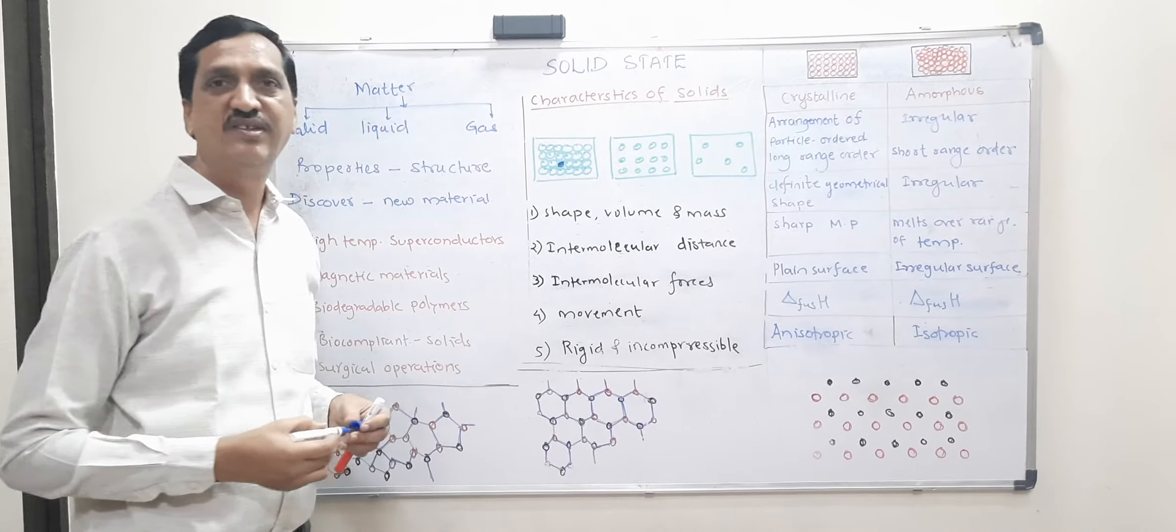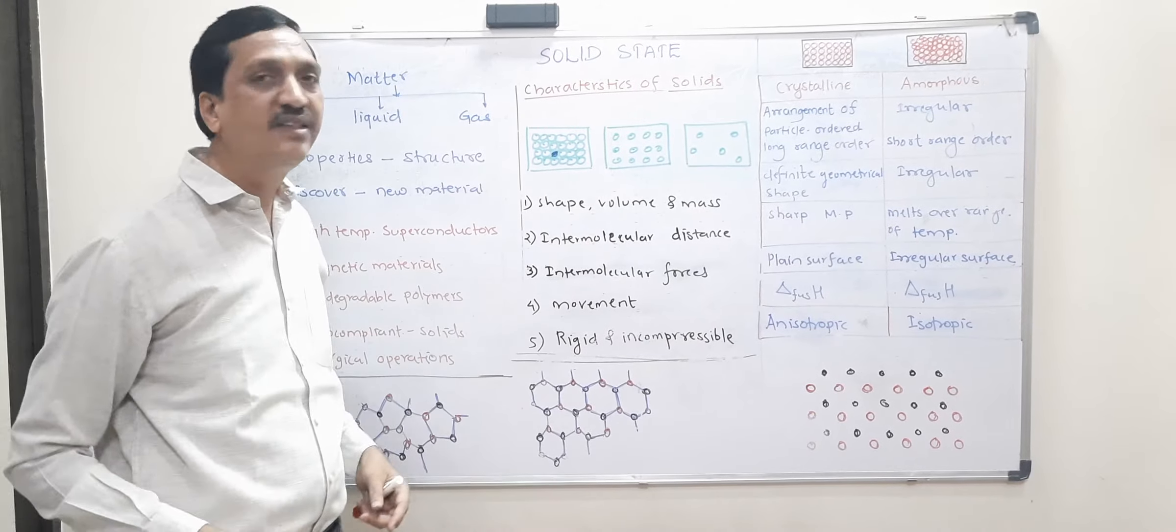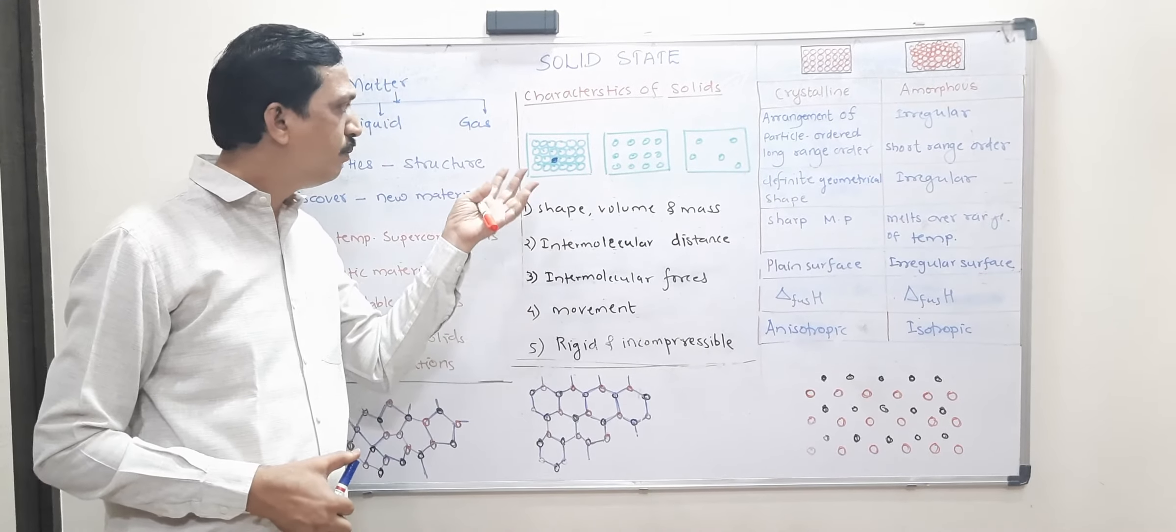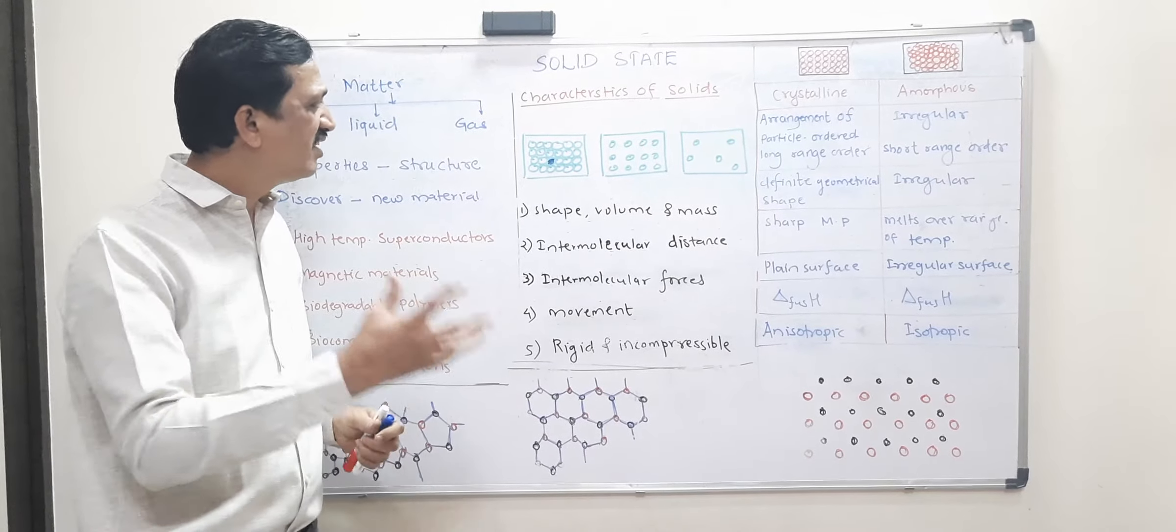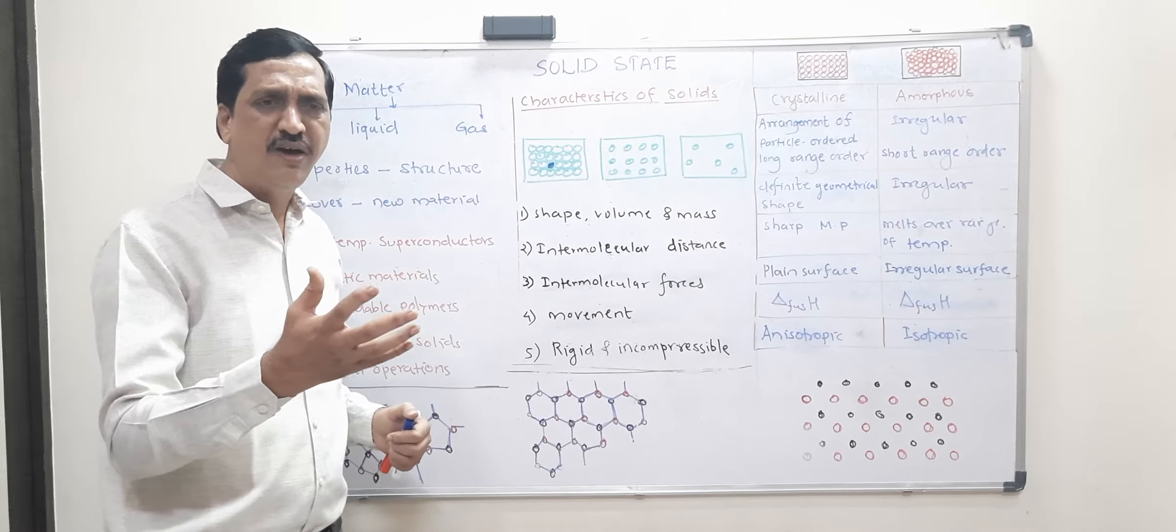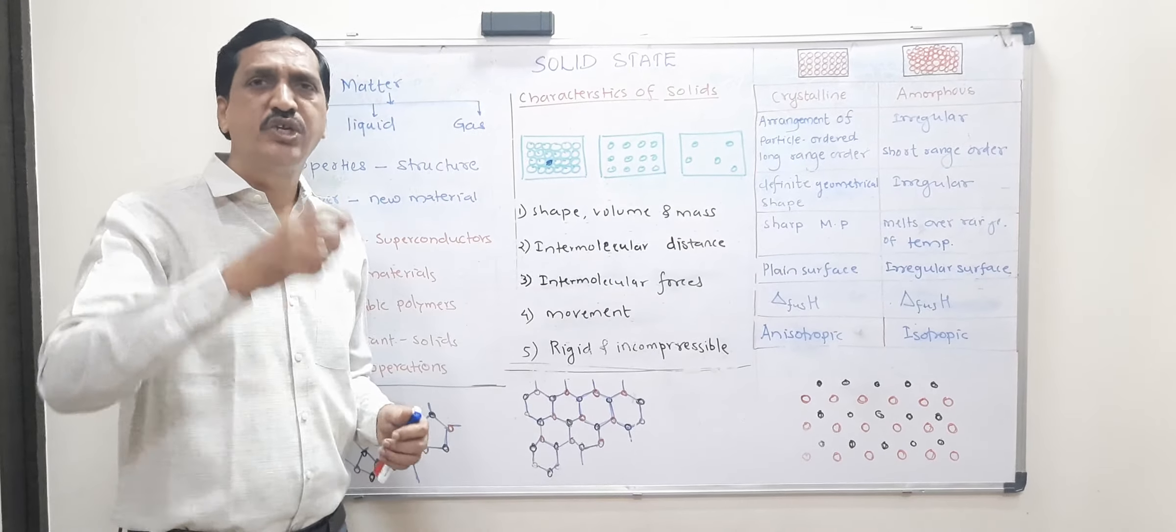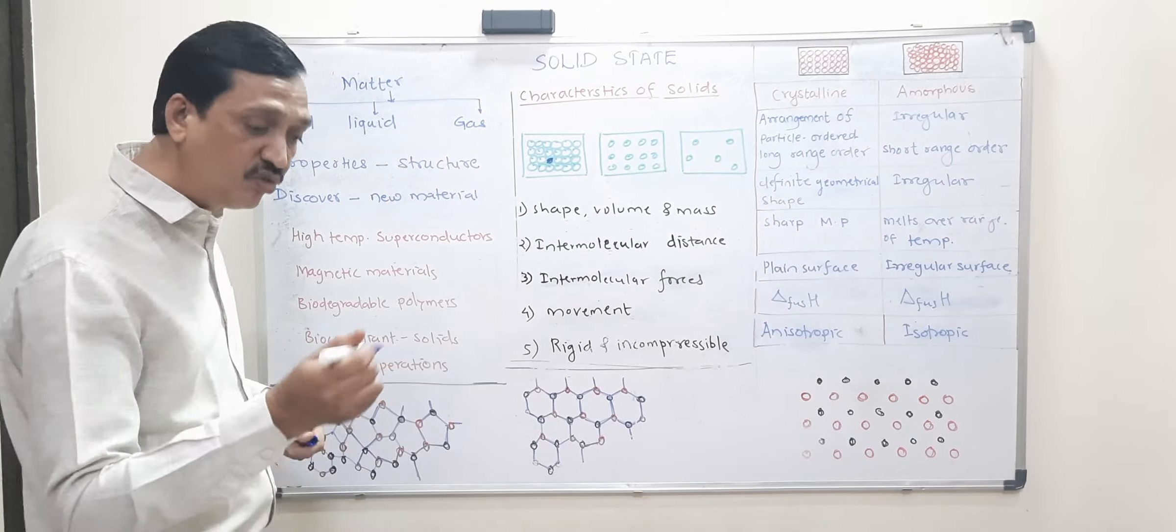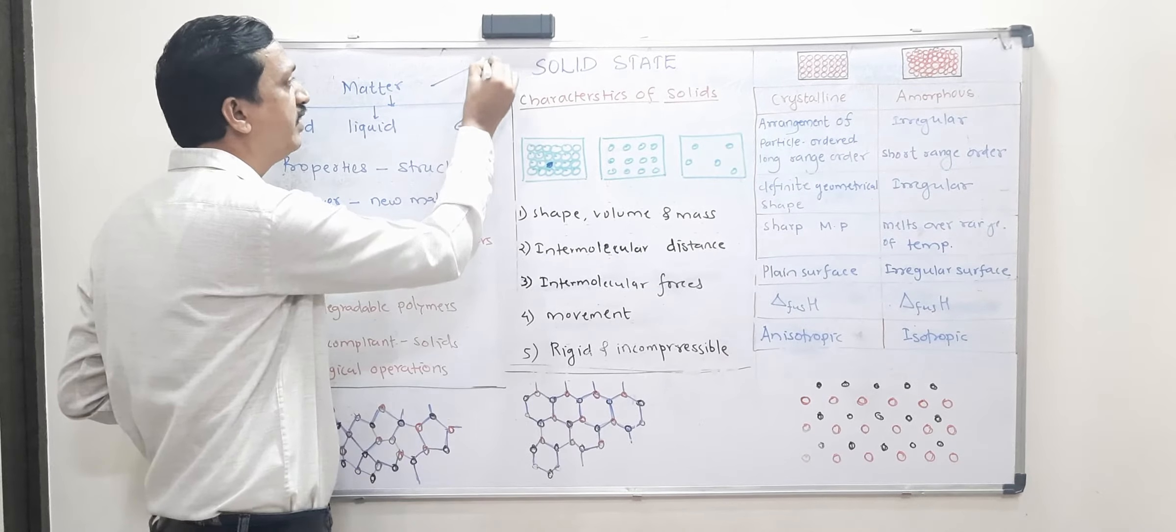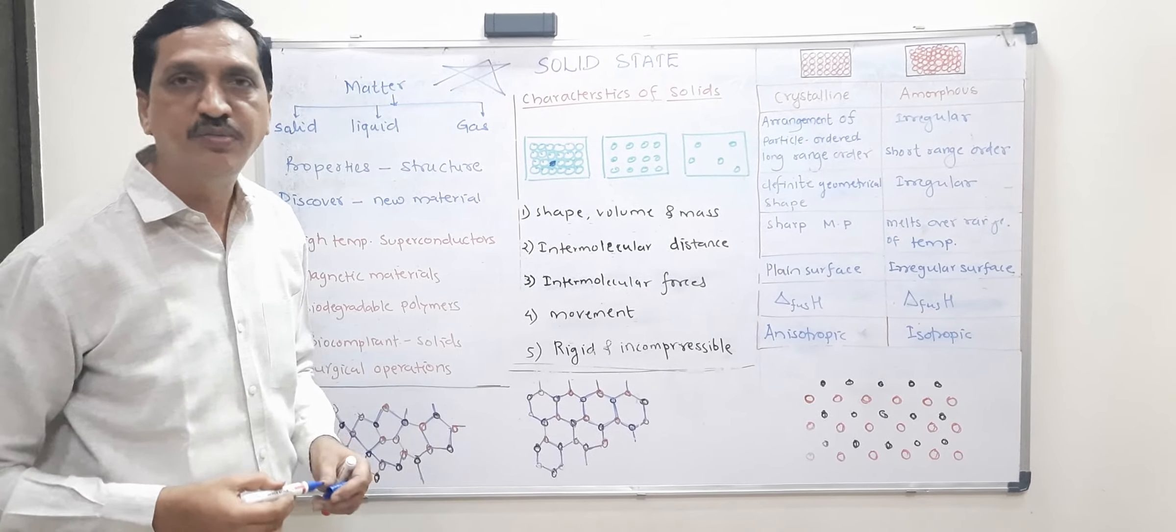Because it is surrounded by many other molecules. So motion, movement is very less. It is restricted. And maximum, they can show the vibrational motion or they can show the oscillational motion. Oscillation or vibrational motion can be shown by them. But they can't show translational motion, like from one place to another place. They can't move easily the way gas molecules move.